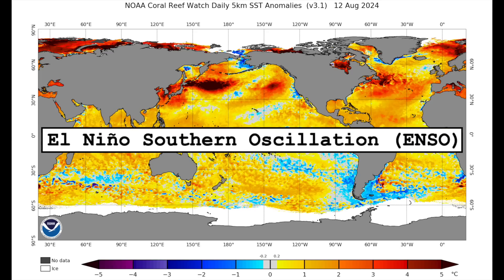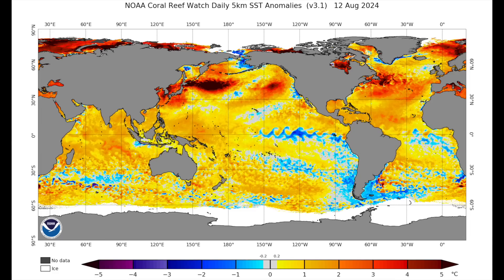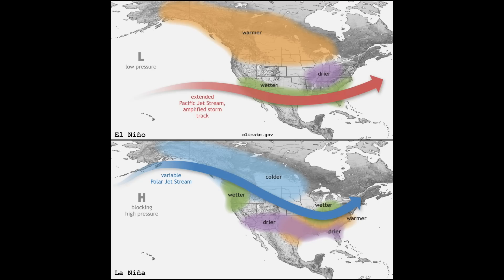Let's start off with the El Niño Southern Oscillation, or ENSO. As a refresher, ENSO refers to the sea surface temperature anomalies in the region of the Pacific Ocean that lies along the equator. Colder than normal sea surface temperatures in this region represent the La Niña phase, while warmer than normal sea surface temperatures represent El Niño. ENSO influences the jet stream. The El Niño phase often leads to a more muted, southward-shifted jet stream.